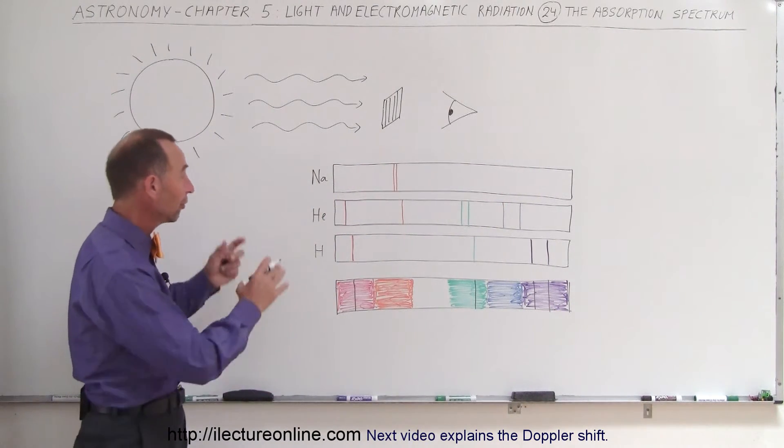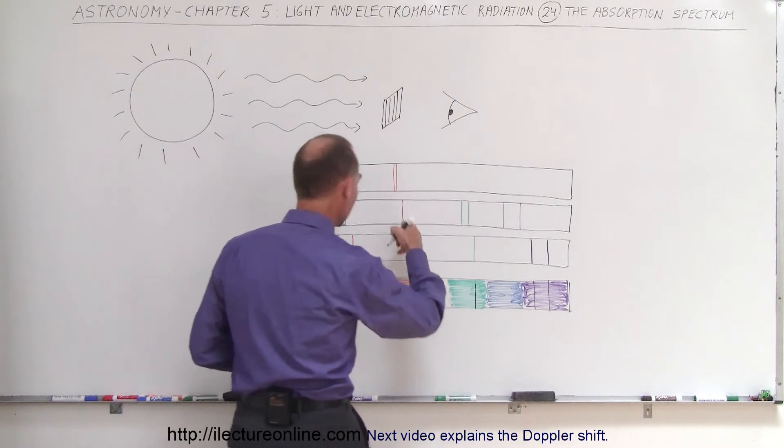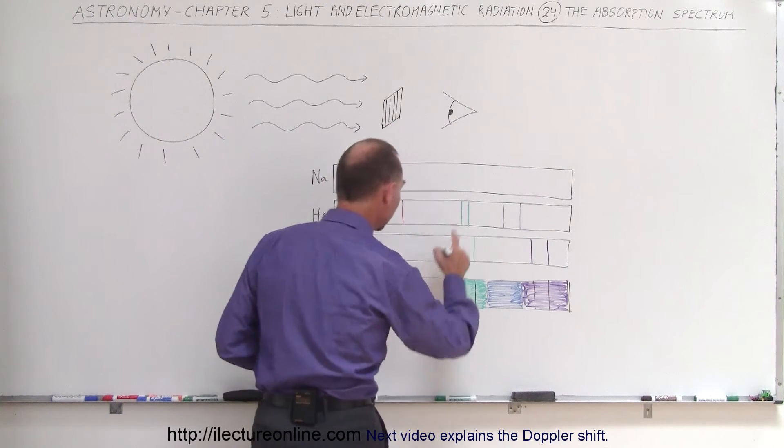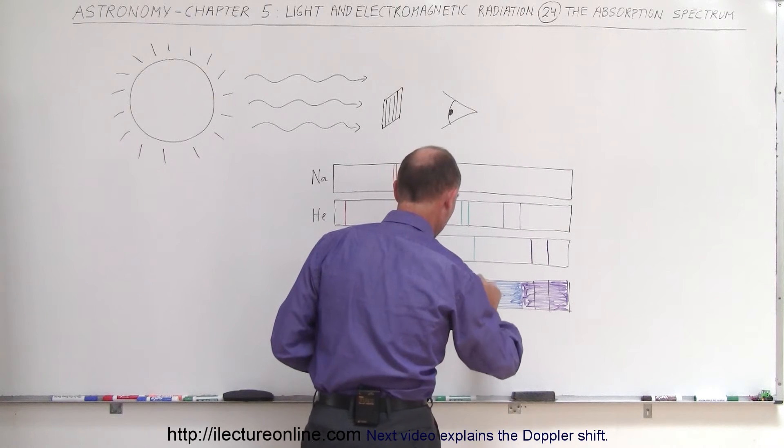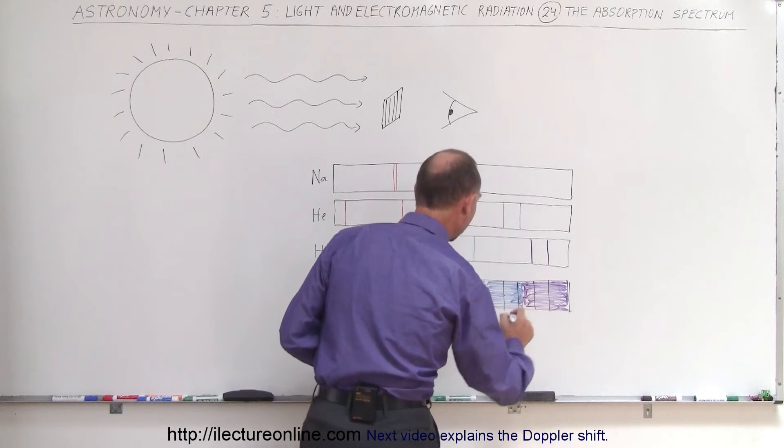But not only for hydrogen, also for helium. So you have a red line there, so that one is missing. And here we see the orange line, that one would be missing. Those two green lines, those two would be missing. And then we see the two blue lines, those would be missing.